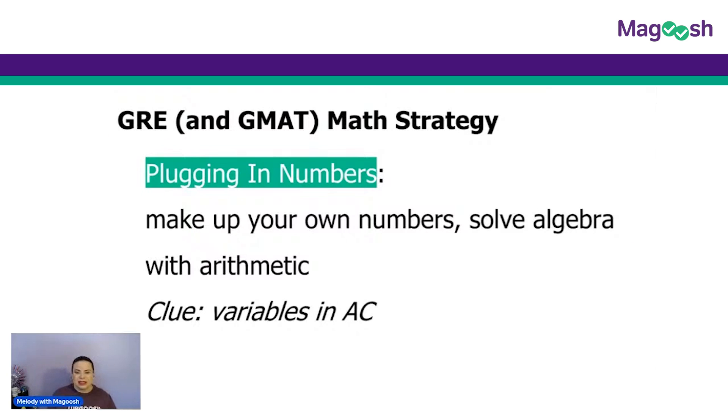Your clue that this strategy of plugging numbers is an option, your clue is when you see variables in the answer choices. AC here stands for answer choices.